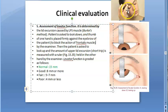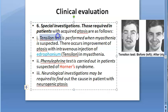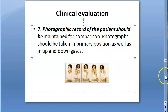In clinical evaluation, they ask the person to look down and then look up, checking how much upper lid excursion is happening — normal is around 15 millimeters. Special investigations include the Tensilon test to check for myasthenia gravis, checking for Horner's syndrome, and examining the responsible nerves. They also keep a record of photos for comparison. Now we reach the stage of treatment.